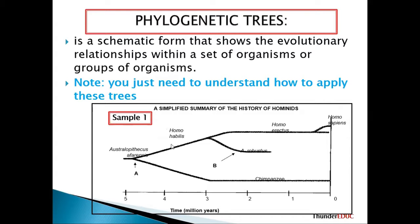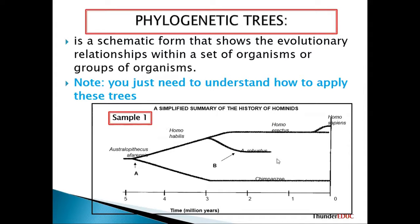Australopithecus afarensis gave rise to Homo habilis and also to chimps. Homo habilis gave rise to Australopithecus robustus and also to Homo erectus — the upright walking man. Then Homo erectus gave rise to Homo sapiens. That's how we can interpret it.